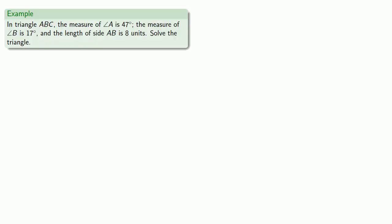So let's take a triangle like this, where the measure of A is 47 degrees, the measure of B is 17, and the length of the side AB is 8 units. Let's solve the triangle. In other words, we want to find the measure of all three angles and the lengths of all three sides. Well, let's draw a picture.